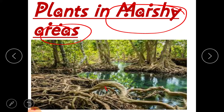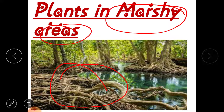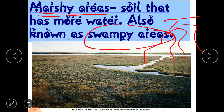The roots of plants in marshy areas are found above the soil so that they can breathe. Because the soil has more water, there is no air inside the soil. So to breathe, the roots come outside.